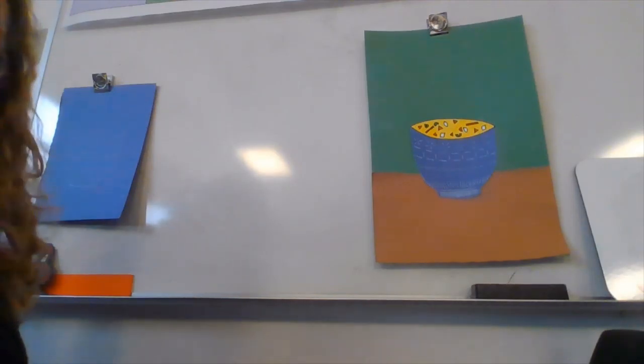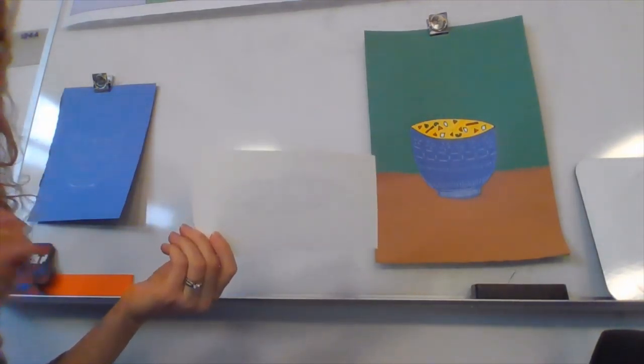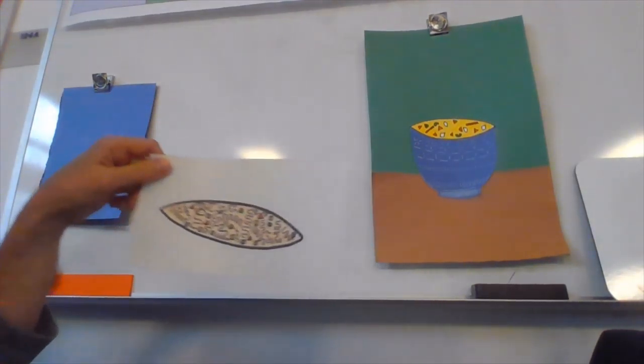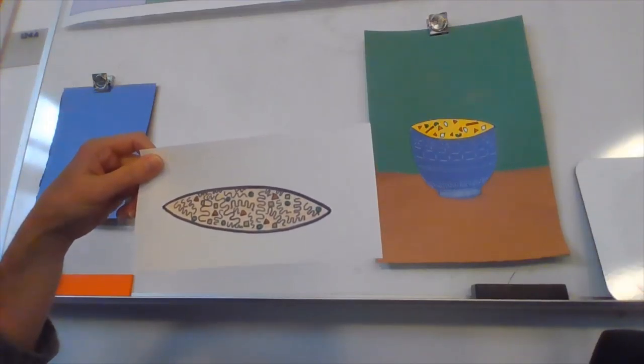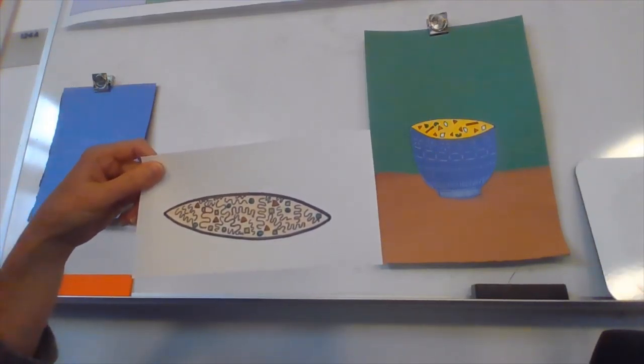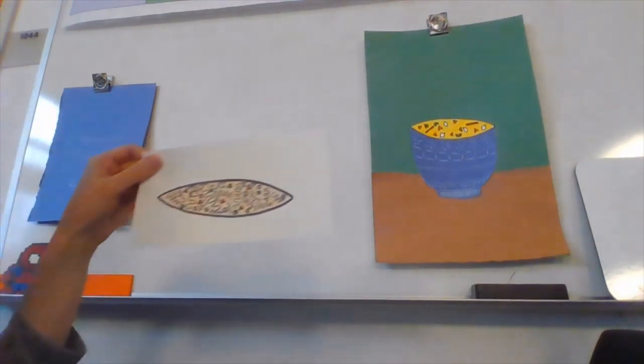What I did was I took a piece of paper like this. I drew, I'm flipping this over, I drew a shape that looks kind of like almost like an eyeball, and that shape is going to fit at the top of the shape of my bowl.